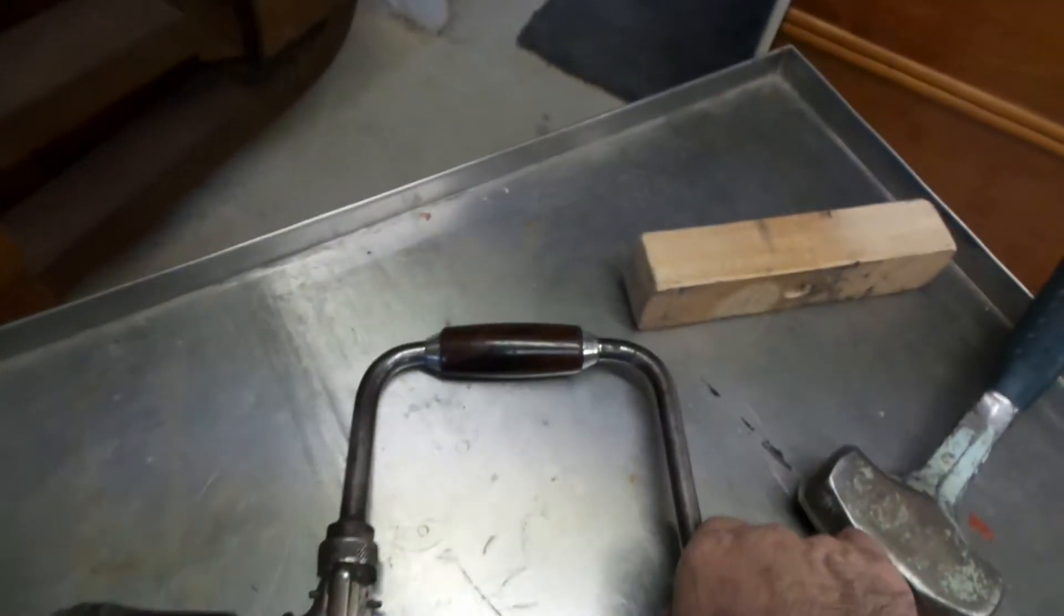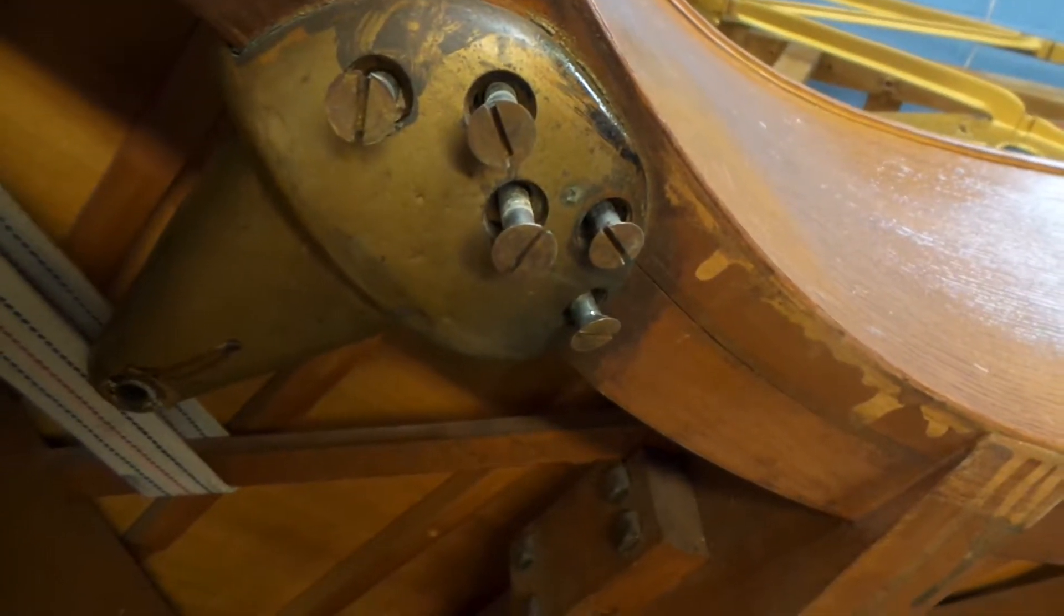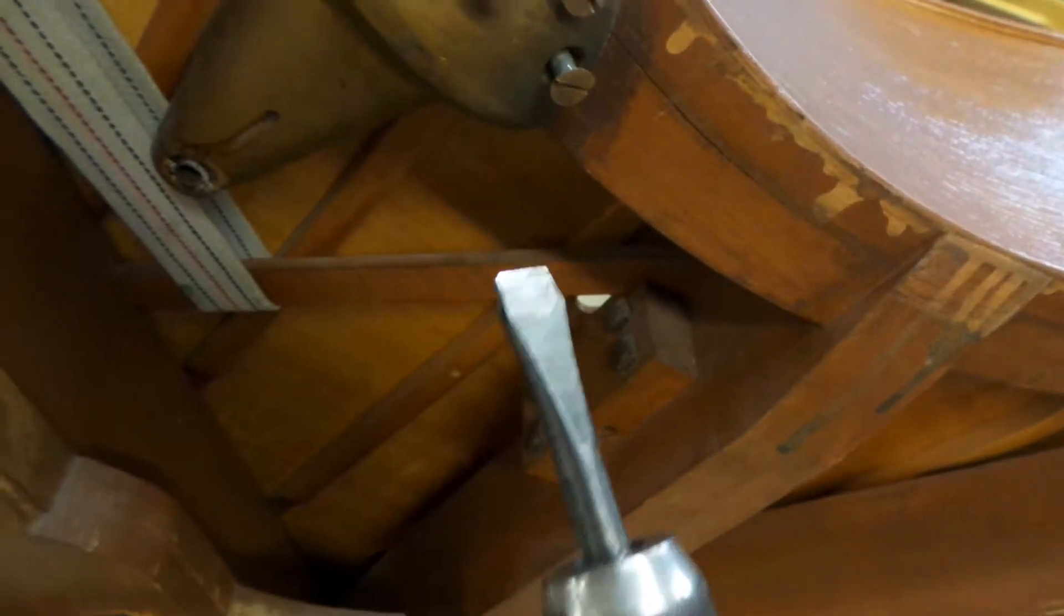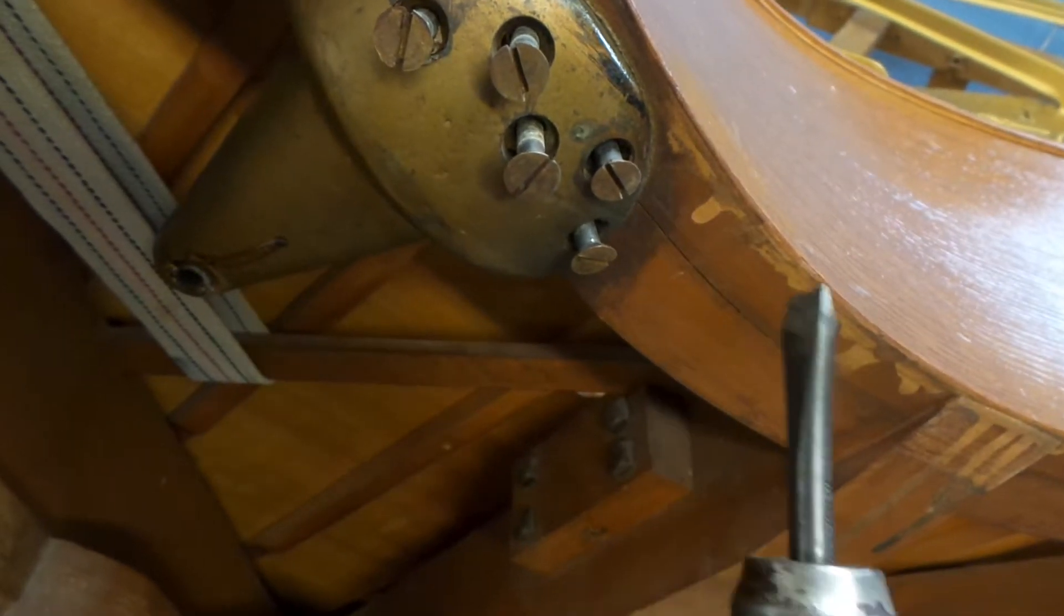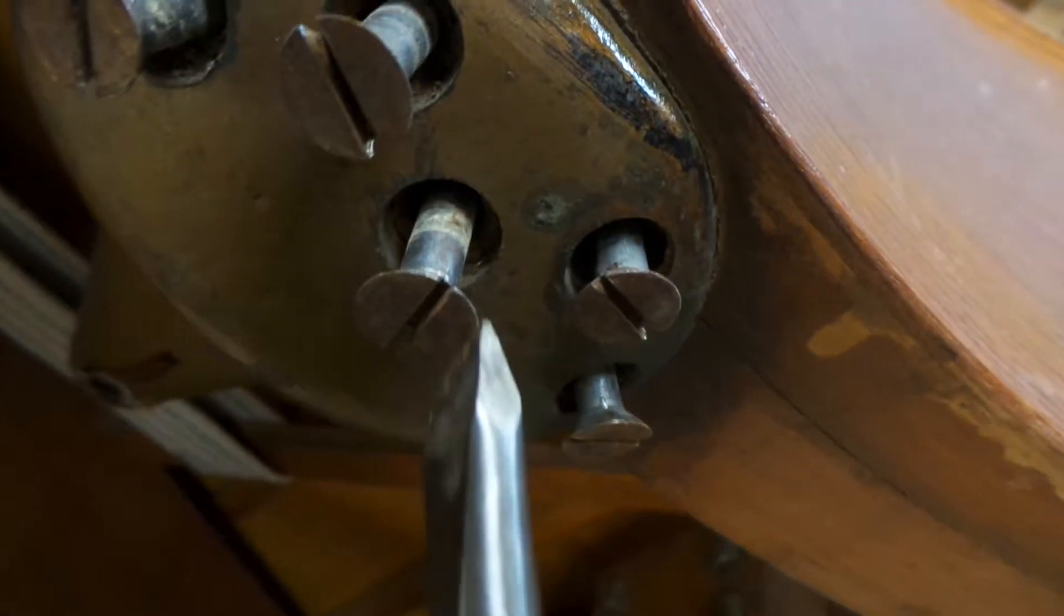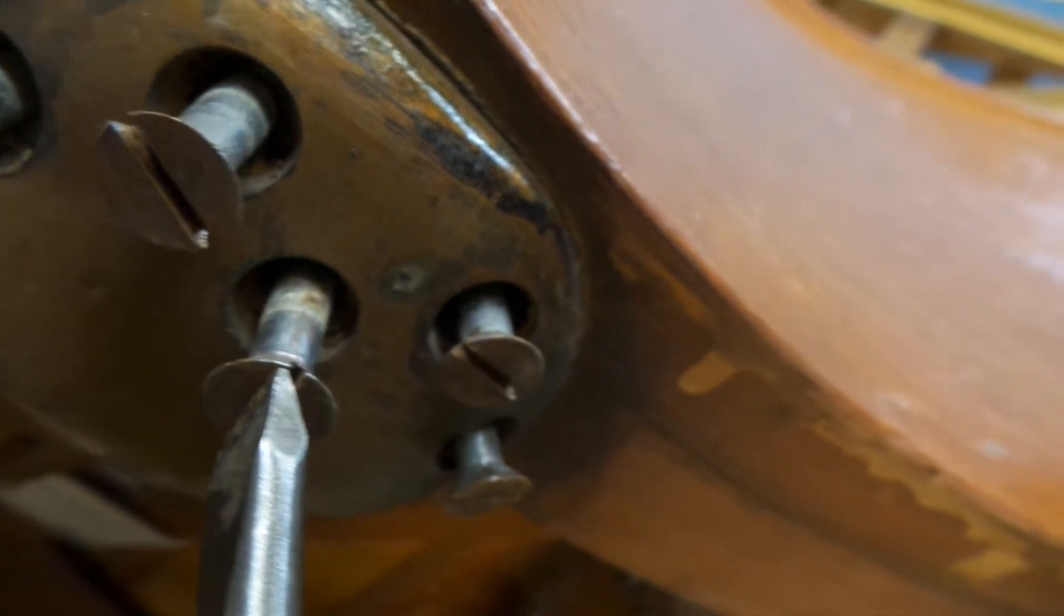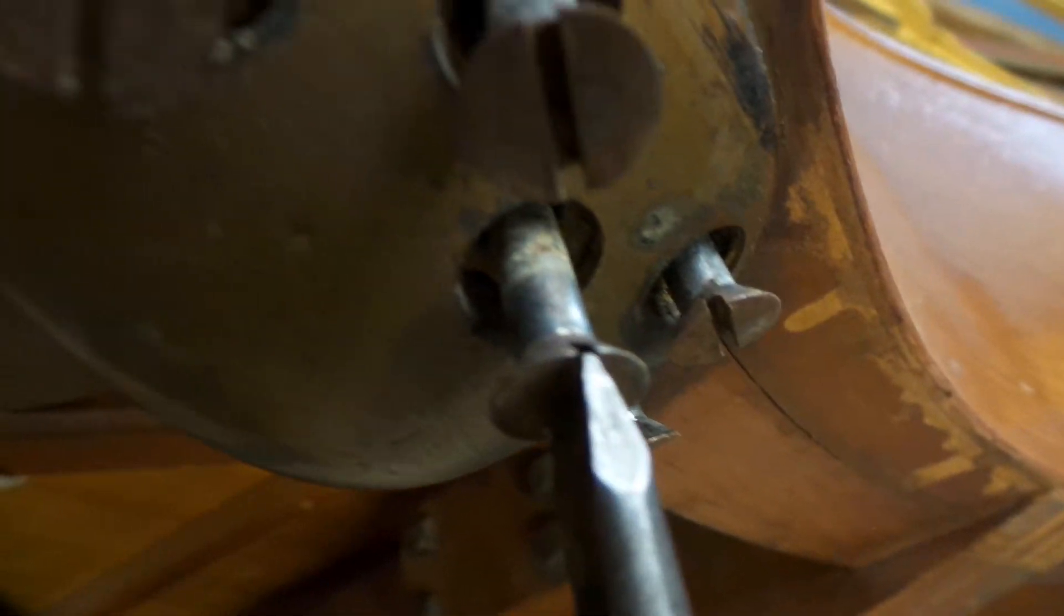All right, just one last thing that I wanted to rant about. Even these lowly screws on something like the bell, I see these messed up all the time and these were fine. If you do this kind of stuff, get yourself a bit like this and file a profile on it so it fits perfectly in here. These and the plate, why mess up these screws? Don't do it. I can buy new ones but I don't want to.